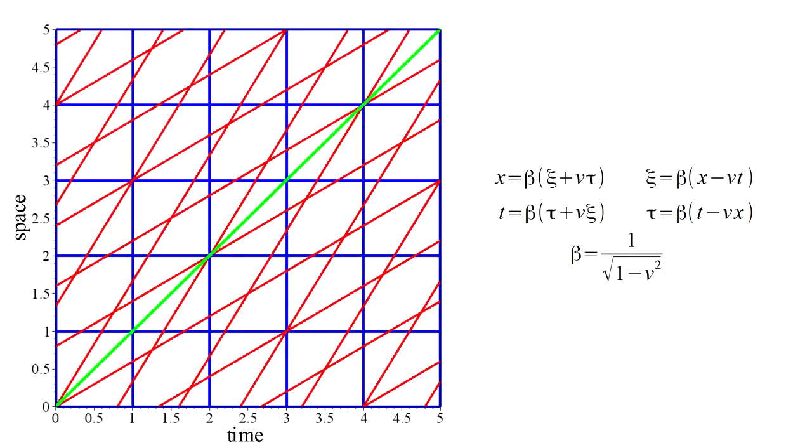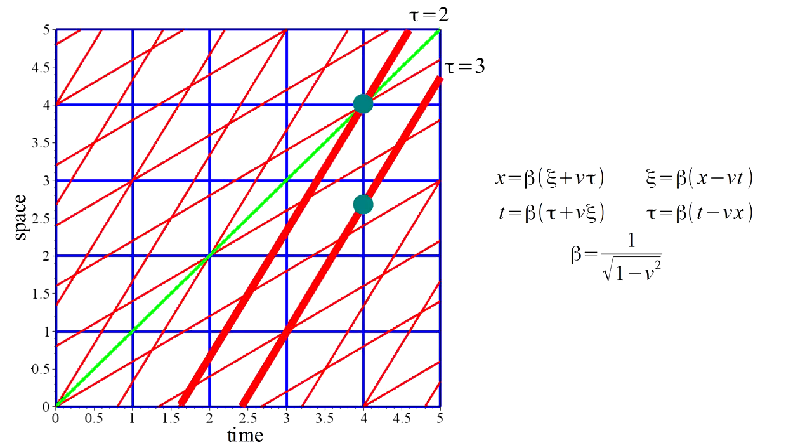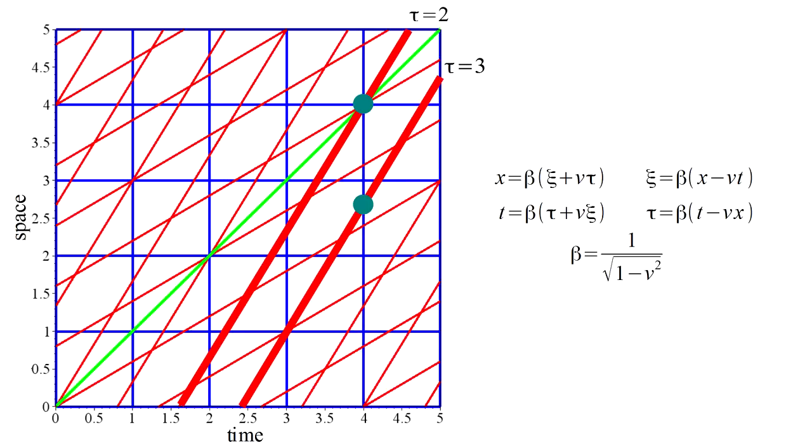But the coordinate transformations we developed in video two of this series tell us that if you and I are moving relative to each other, then two events you perceive to take place at the same time, I may perceive to take place at different times.